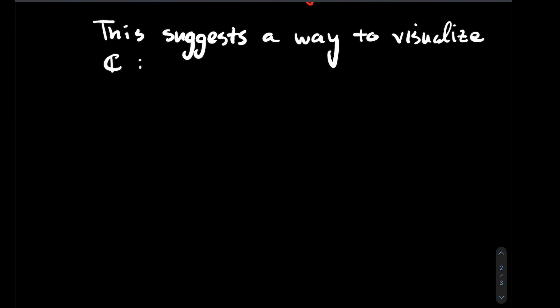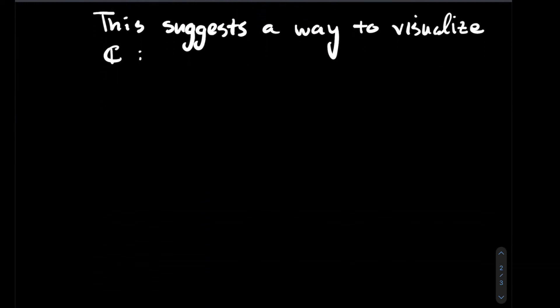This suggests a way to visualize the complex numbers. We can think about it as a plane, taking the real part as the horizontal axis, because that's x and consistent with what I've learned, and the imaginary part as the y-axis, the vertical axis.